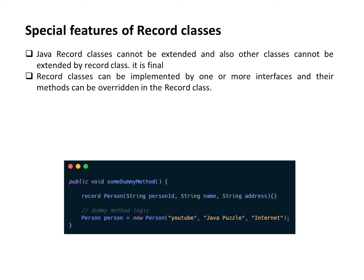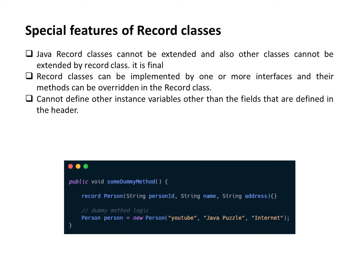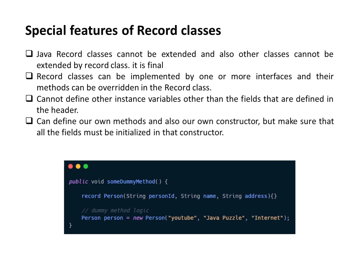Record classes can be implemented by one or more interfaces, and their methods can be overridden in a record class. You cannot define other instance variables other than the fields defined in the header section. You can define your own methods and also your own constructor, but make sure all the fields must be initialized in that constructor. Finally, records can be defined locally inside a method - as you can see here, we are using a record inside a method named 'someDummyMethod'.